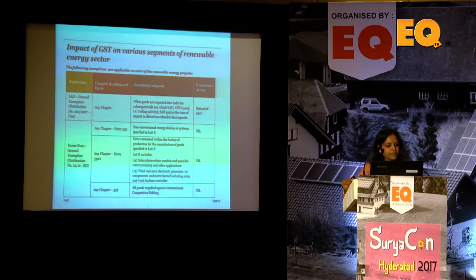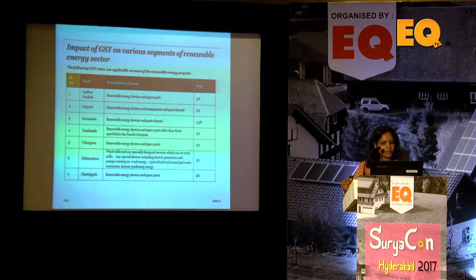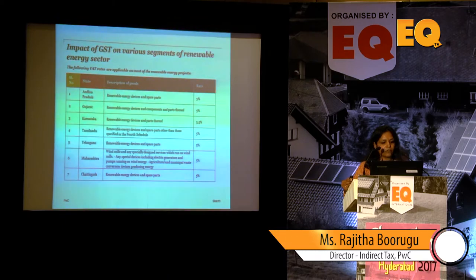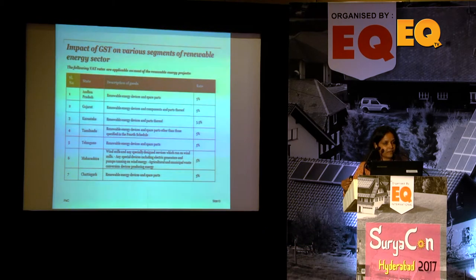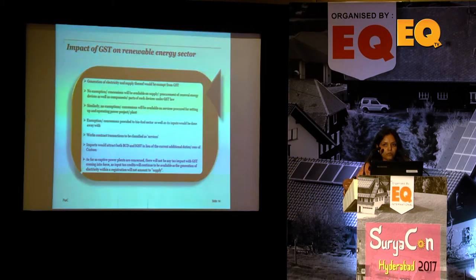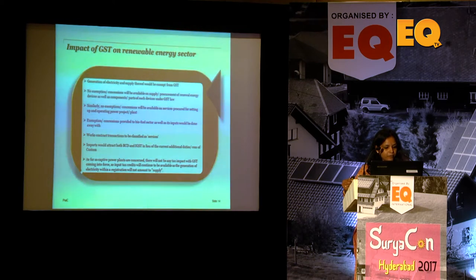The earlier slides covered excise duty exemptions under the 12/2012 notification where various products fell under the nil category. Pre-GST, renewable energy devices and windmill components broadly fell under a 5% or 5.5% VAT category. Now, electricity generation is outside GST with no exemptions or concessions available on procurement. There is also no exemption for services procured for setting up a power plant, and works contracts are classified as services at 18%.